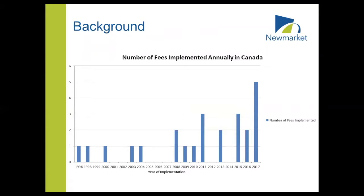Particularly with this project, there was a focus on the Lake Simcoe watershed where the Town of Newmarket is located. The reason for that was because they're really interested in reducing phosphorus loading to the lake, which is managed through the Lake Simcoe Protection Plan, the Lake Simcoe Protection Act, and our Municipal Stormwater Master Plans.